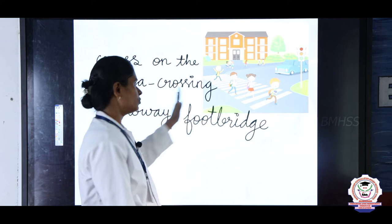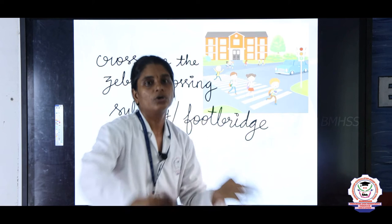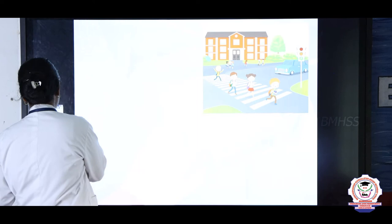When you want to cross the road, you have to look to the right side, then the left side, and again to the right side — three times. Only if there are no vehicles should you cross the road.